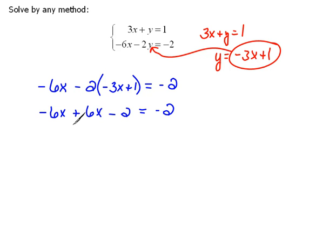Now here in this case, a negative 6x plus 6x, those cancel out, and we have negative 2 equals negative 2. This is a true statement. What this is telling us is, it does not matter what x value we use here, it will always make a true statement.